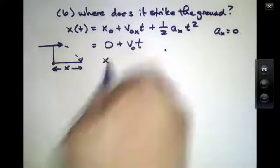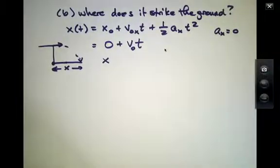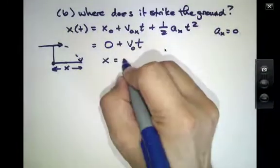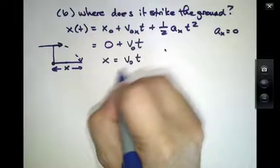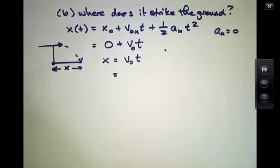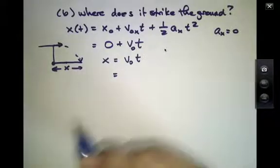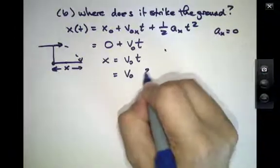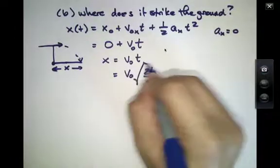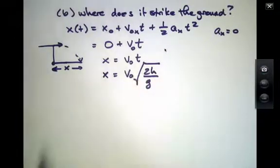So this x at this later time will equal v0 times t. And what time should we put in there? We should put in the time that we calculated for when the ball strikes the ground, because it will keep moving off to the right until the ball strikes the ground. So that's v0 times the square root of 2h over g. And that's our entire answer.